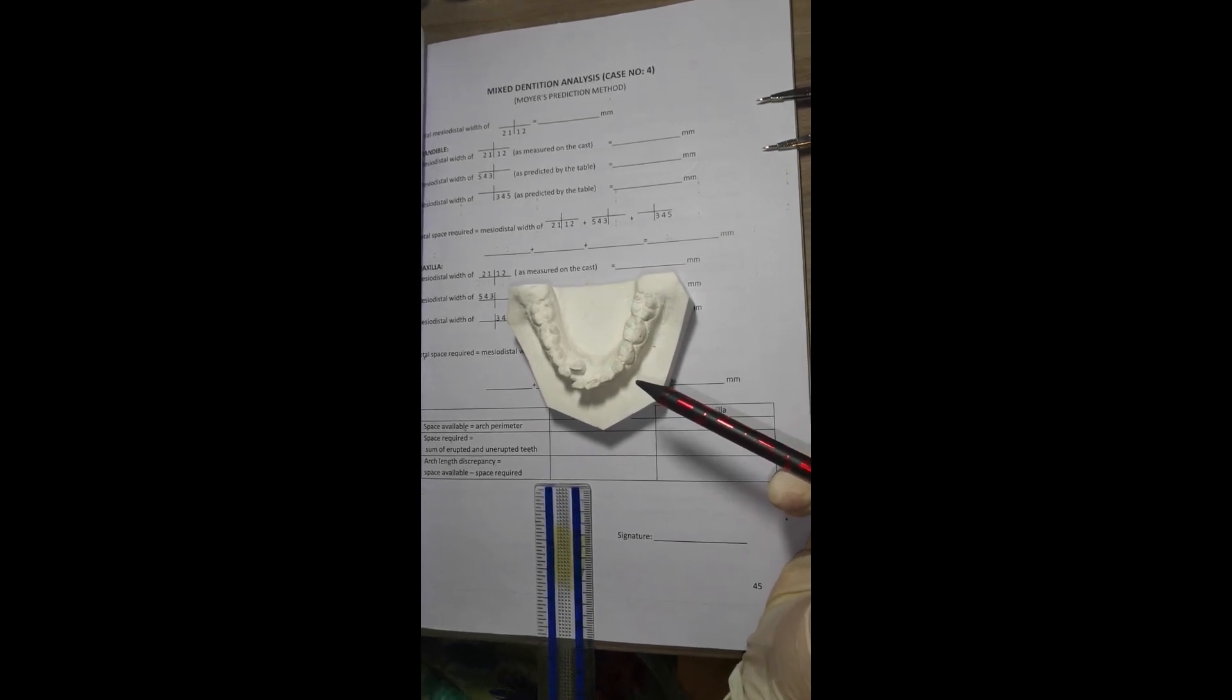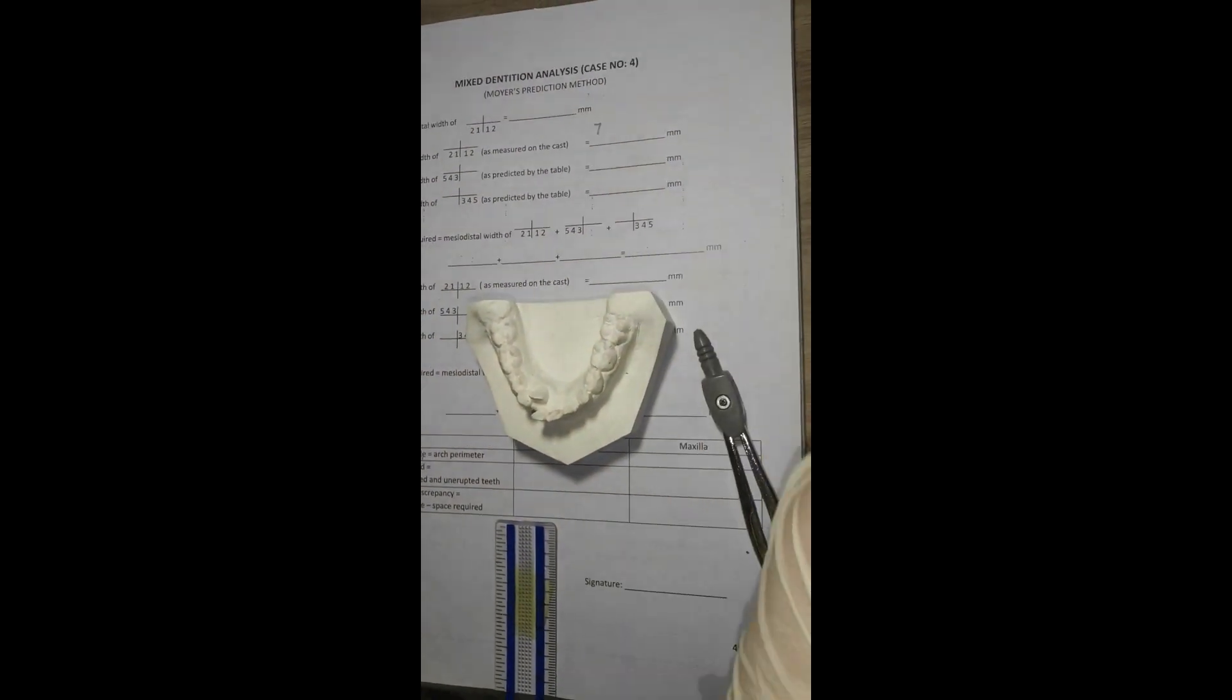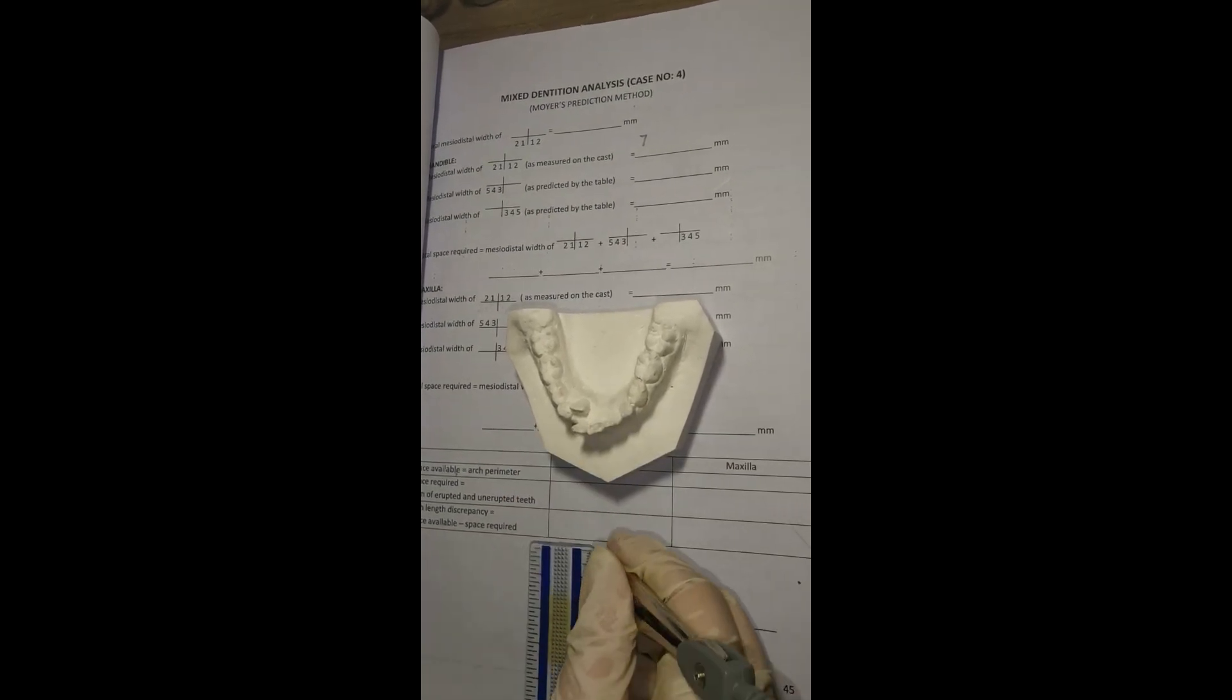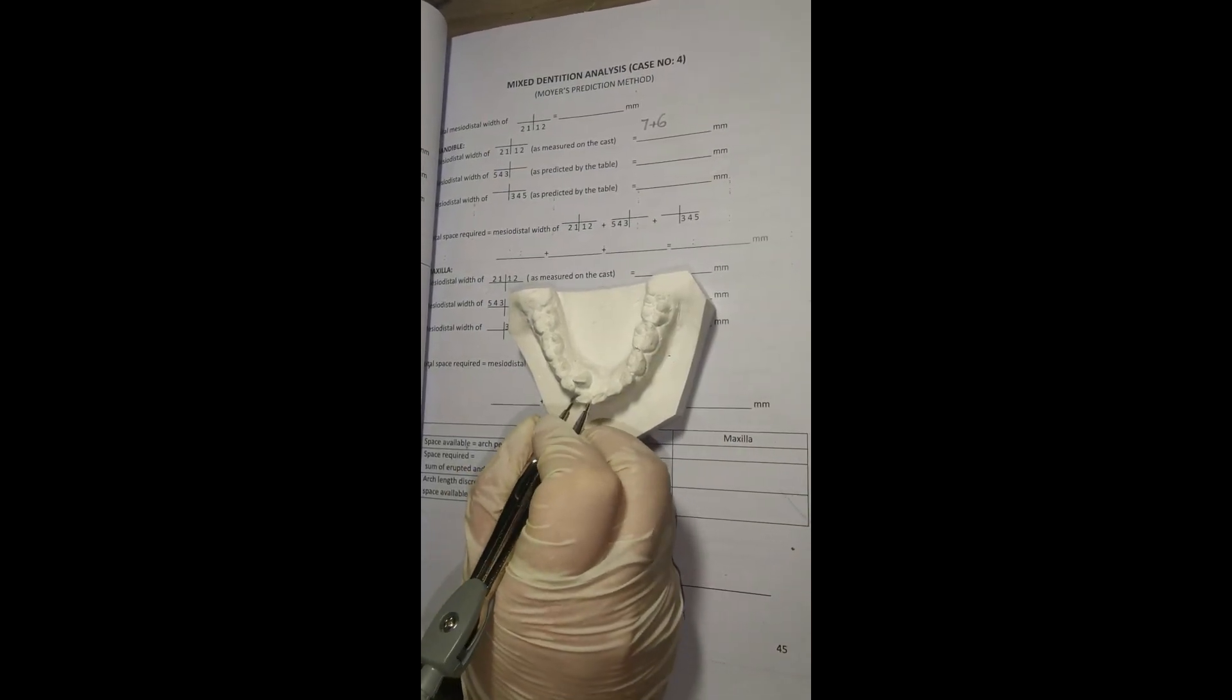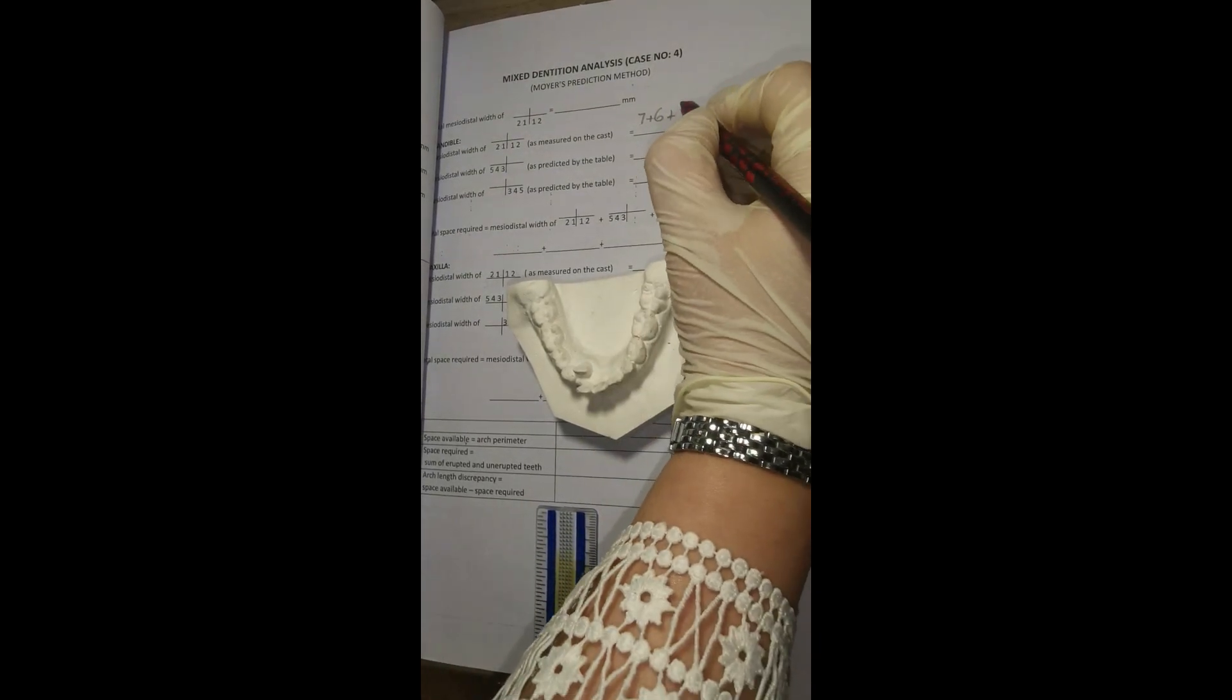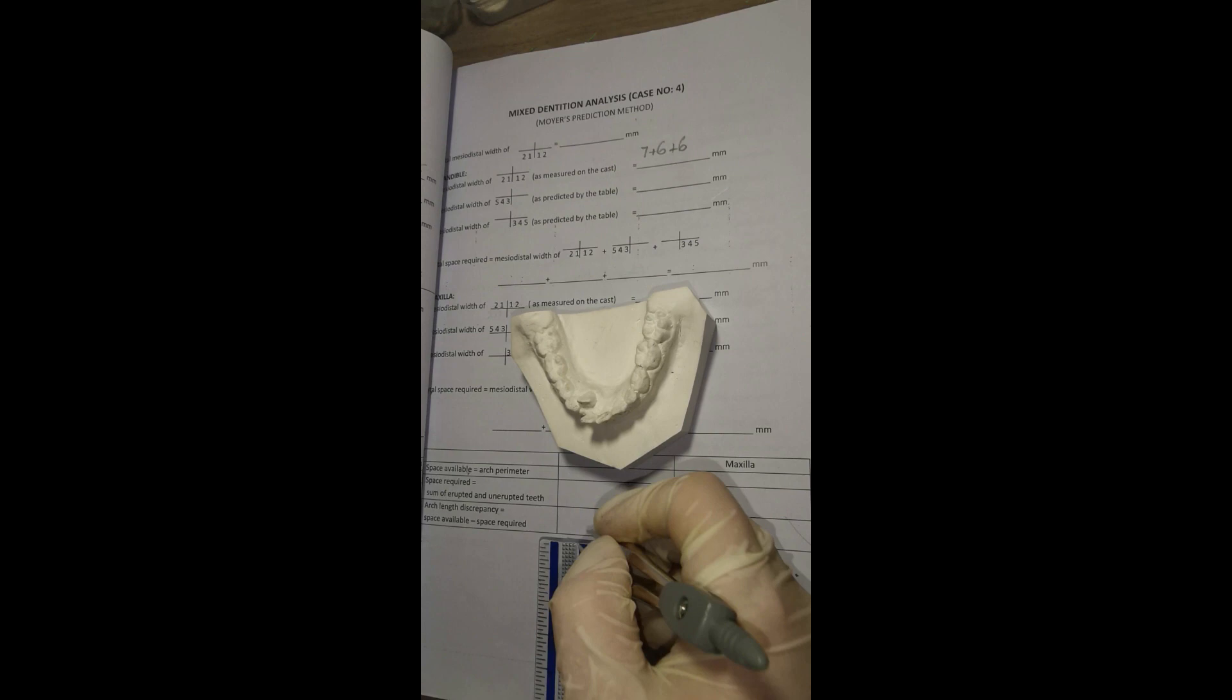First, I will find mesodistal width of mandibular incisors. Width of mandibular left lateral incisor is 7 mm. Width of mandibular left central incisor is 6 mm. Width of mandibular right central incisor is 6 mm. Width of mandibular right lateral incisor is 6 mm.